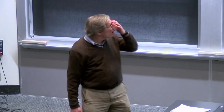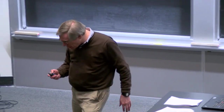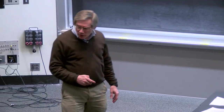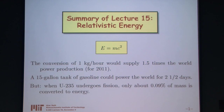Let's get started. As usual, I'd like to begin by giving a review of what we talked about last time, this time on slides instead of on the blackboard. We're talking mainly about relativistic energy, or relativistic energy and momentum and pressure sometimes. The key equation is probably the most famous equation in physics, Einstein's E equals mc squared.